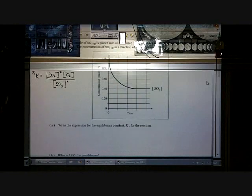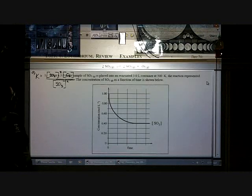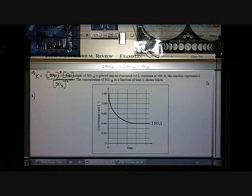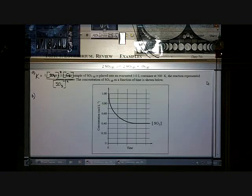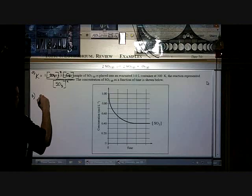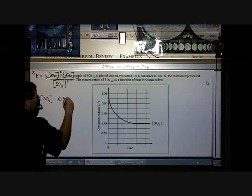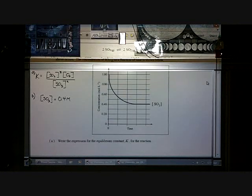Part B asks, what is the concentration of SO3 at equilibrium? Can anybody tell me? It started at one molar, and then it finished at 0.4. That's all the question's asking. So 0.4 molarity. And that's at equilibrium. So far, the question's pretty tough, right?